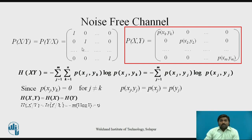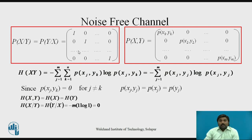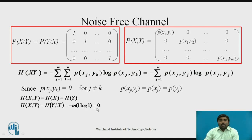From the conditional probability matrix, we can show that H(x|y) or H(y|x) equals −m × 1 × log(1). Why? Because the probability values at every diagonal element are 1 and off-diagonal values are 0, and there are m elements (m sources and m destinations). Since log(1) = 0, the result is 0 multiplied by anything, which is 0. Therefore the conditional entropy for a noise-free channel equals 0.